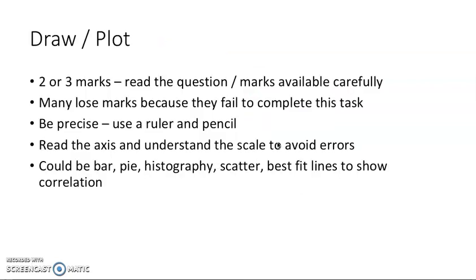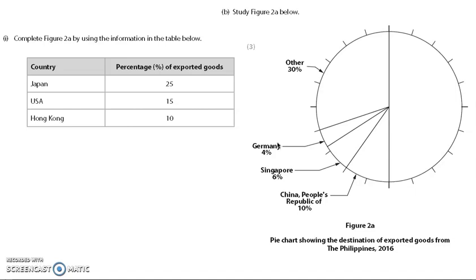Next up, draw or plot. Again, could be two or three marks. Read the question and marks available. Again, this is another area where people can lose marks. If you've got two or three of these questions on a paper and similar to the label ones and you don't do these. That is 10 to 15 marks you could lose. That's the difference between grades. That's why it's important. You look at all of these. Read the axes. Use a ruler and be precise because it could be a bar, pie, histogram or scatter. Or it could even be putting best lines, best fit lines to show a correlation. So again, having a little quick question. How would you fill that in? It's three marks. You've got three things to mark in and make sure you write the name of each one and you continue to label it like the exam board have. So you want to copy what they've done.